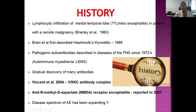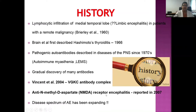Looking back at the history: around 1960, lymphocytic infiltration of the medial temporal lobe was first identified in an adult patient with remote malignancy. Gradually, autoantibodies were discovered in peripheral nervous system diseases like myasthenia. In 2004, Vincent et al. discovered the VGKC — voltage-gated potassium channel antibody complex — responsible for limbic encephalitis. The first autoimmune encephalitis to be reported was in 2007: the NMDA receptor encephalitis, which is the most common encephalitis reported in children.